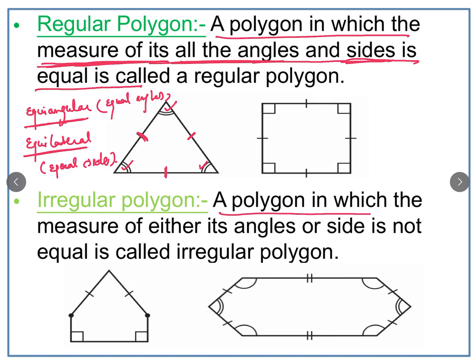An irregular polygon is one in which the measure of either its angles or sides is not equal — it is neither equiangular nor equilateral. For example, in this figure these two sides are not equal and these two sides are not equal. Also, one angle appears to be 90 degrees while another is less than 90 degrees. Neither the angles nor the sides are equal. Such a polygon is called an irregular polygon.